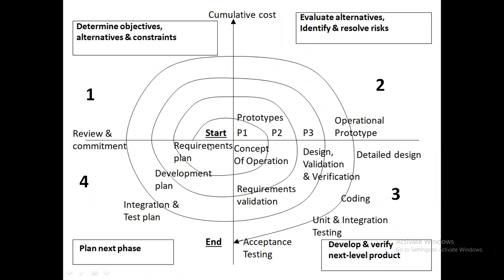To develop this software, we go through four spirals, and the cost keeps on increasing with each spiral generated during software development. This is how the spiral model works.